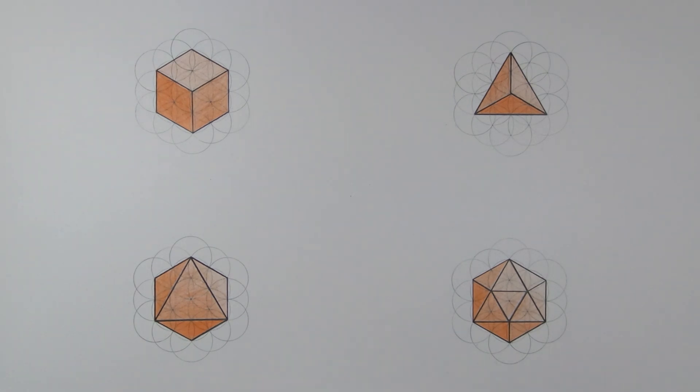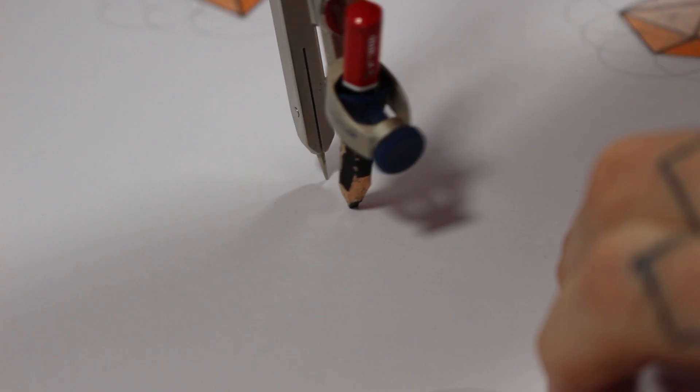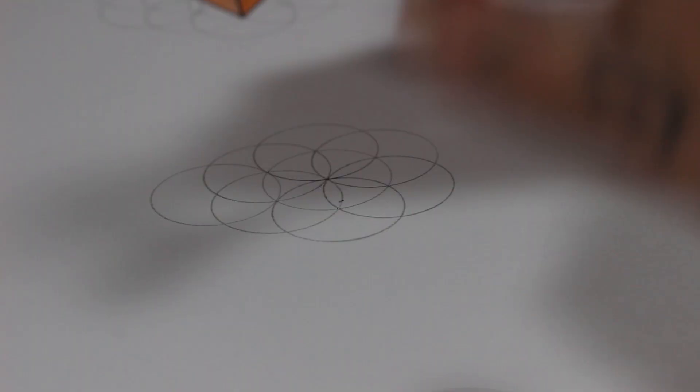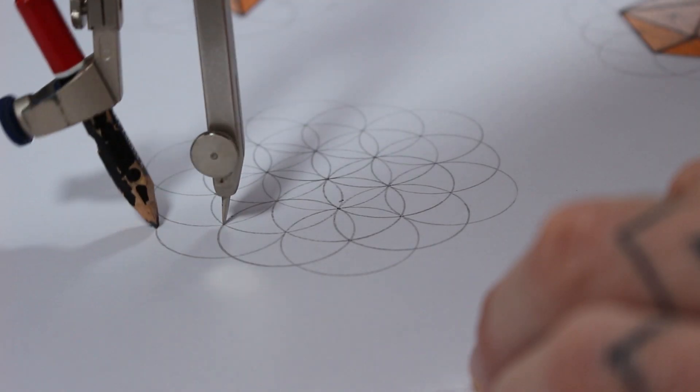Alright, and the last one is the dodecahedron. This one's a bit more complicated. You're going to do the flower of life again the same way, but instead of having 19 circles, it's going to have 61 circles.